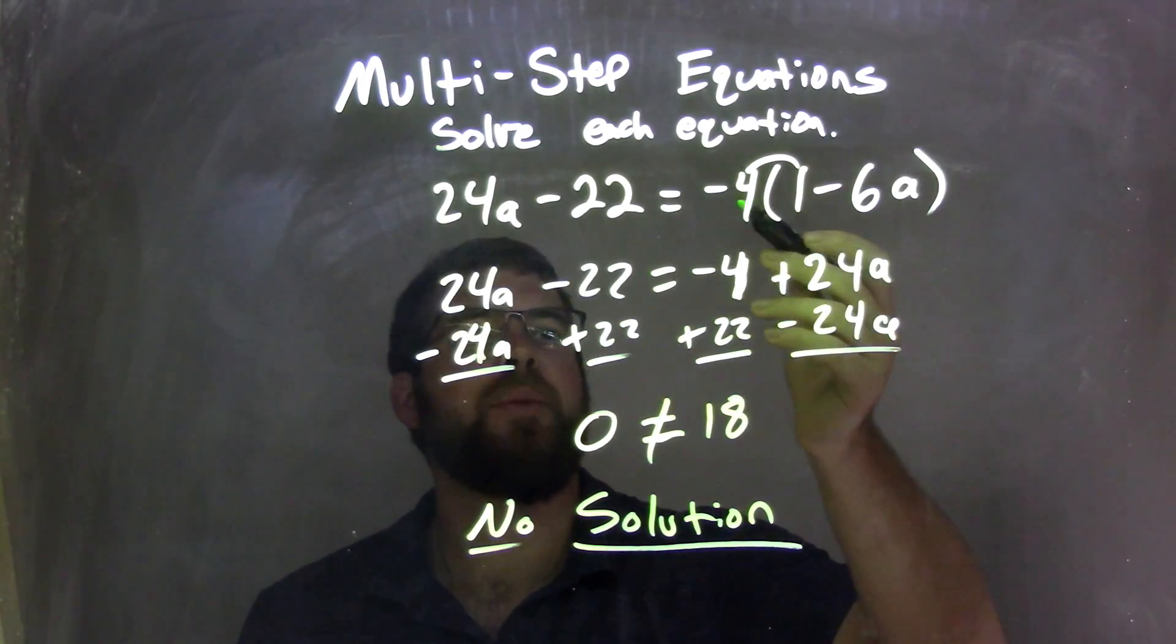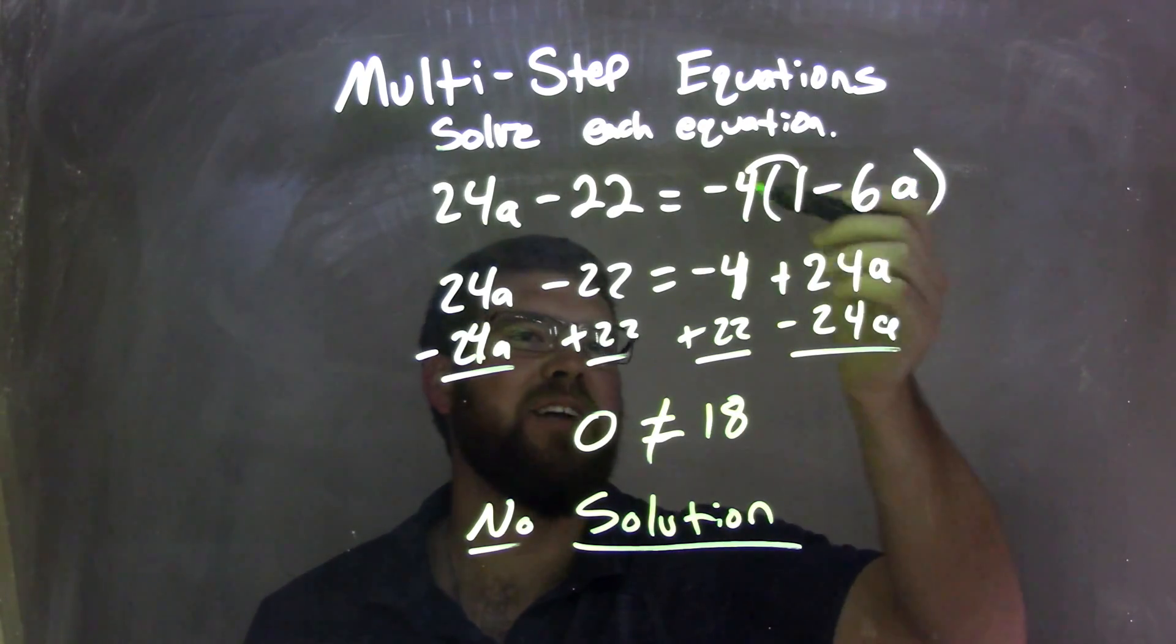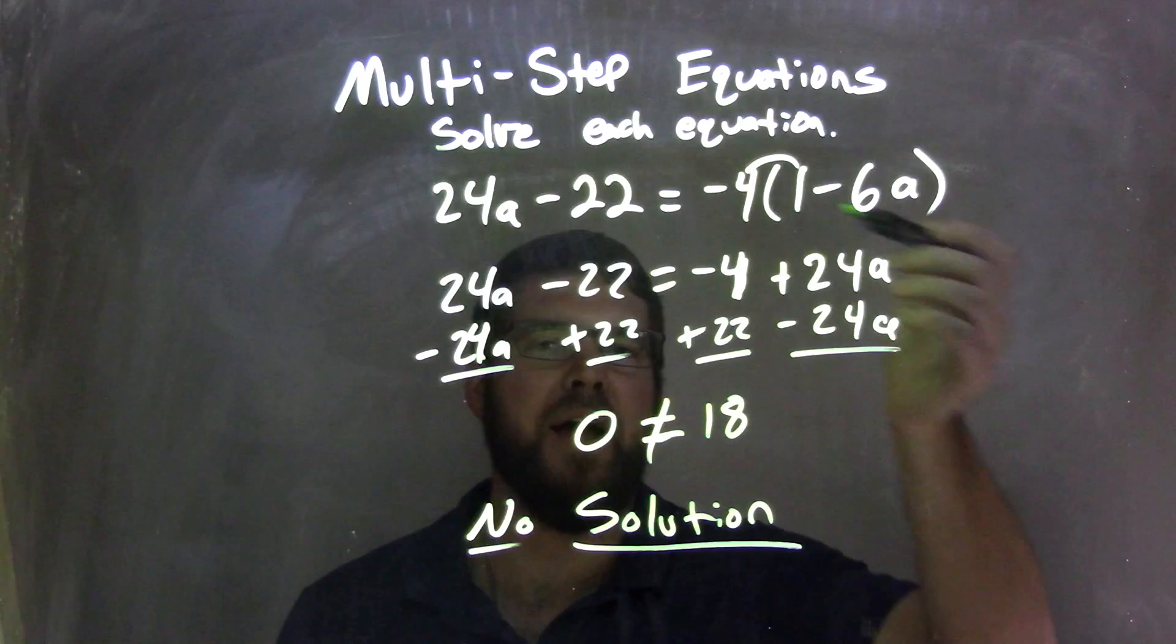So as a recap, I distributed negative 4 across. Negative 4 times 1 is negative 4, and minus 6a is plus a negative. So negative 4 times negative 6a is positive 24a. Two negatives multiplied is positive.